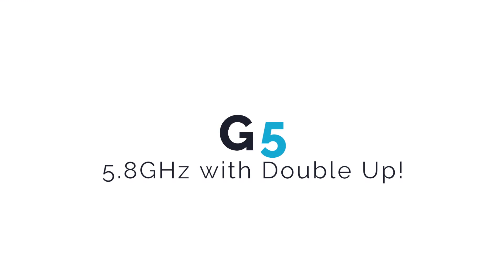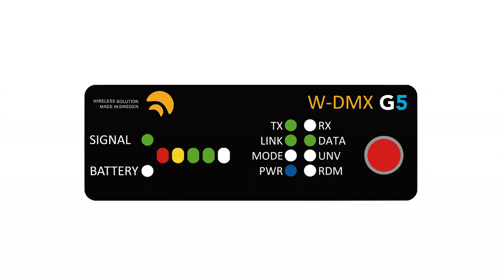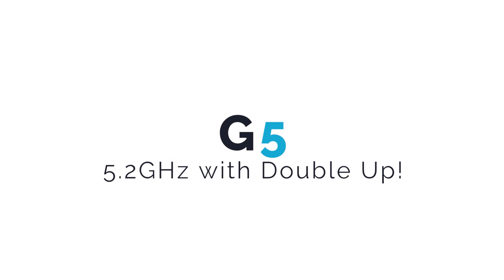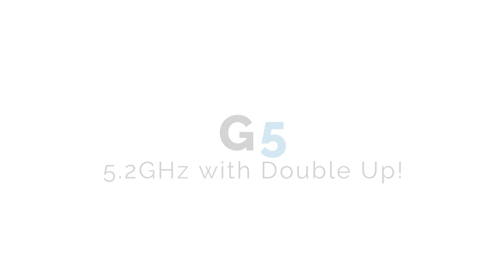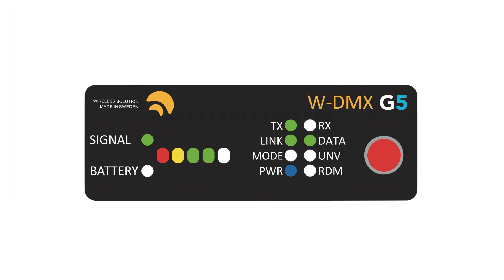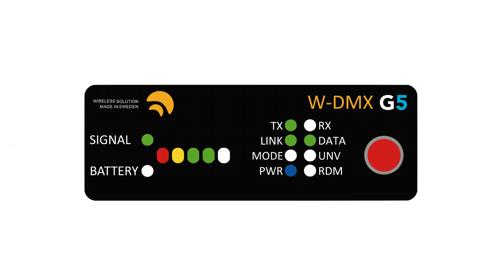In G5 double up mode at 5.8 gigahertz, both mode and universe LEDs blink slowly. In G5 double up mode at 5.2 gigahertz, both mode and universe LEDs blink quicker. You can find all this and much more at wirelessdmx.com.